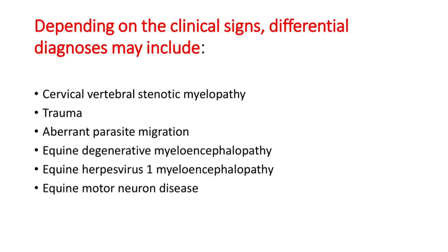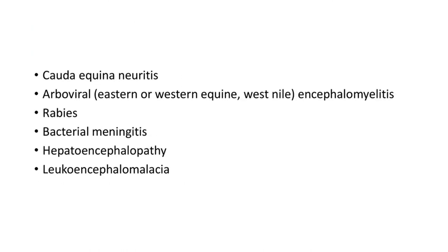Depending on the clinical signs, the differential diagnosis may include cervical vertebral stenotic myelopathy, trauma, aberrant parasite migration, equine degenerative myeloencephalopathy, equine herpesvirus-1 myeloencephalopathy, equine motor neuron disease, cauda equina, equine motor neuritis, arboviral encephalomyelitis (Eastern or Western equine encephalomyelitis), rabies, bacterial meningitis, hepatoencephalopathy, or leukoencephalomyelacia. All these conditions should be ruled out.